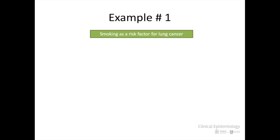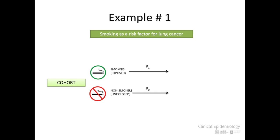Example number one. Let's imagine a study — in fact there are many of them — where we want to determine the role of smoking in the risk of developing lung cancer. For this, a prospective cohort study is carried out, based on a population free of lung cancer, but part of it exposed to the risk factor, that is, they are smokers. As we have seen in the previous sections of this course, we can calculate the incidence or new cases of lung cancer in both populations, exposed and unexposed.